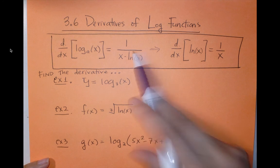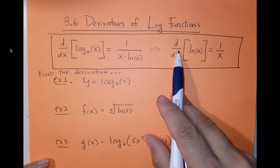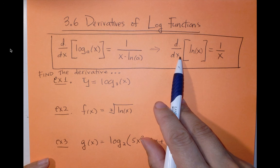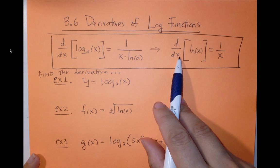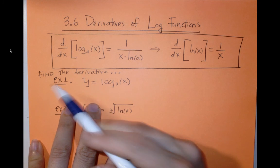How do you prove this? Well, you can use implicit differentiation, as we did with arc sine in Section 3.5 to figure out this derivative. I'm not going to go through it because the process is basically the same. So check that out in your textbook. But let's do some examples.